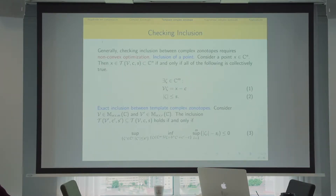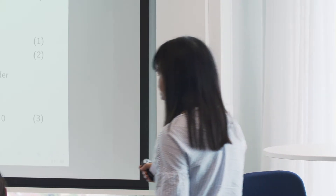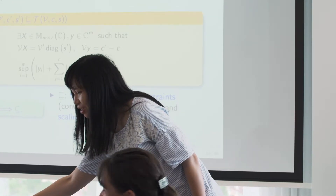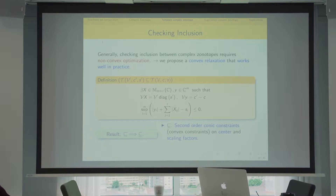For checking inclusions between two complex zonotopes, writing out all conditions gives a non-convex optimization problem, which is expensive. We propose a relaxed version of inclusion checking that transforms the non-convex optimization problem into second-order conic constraints.